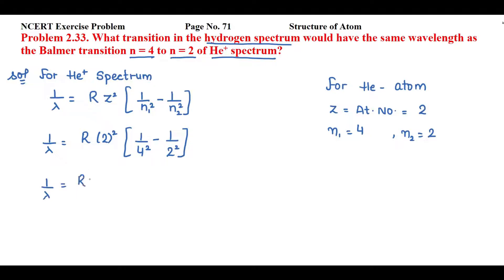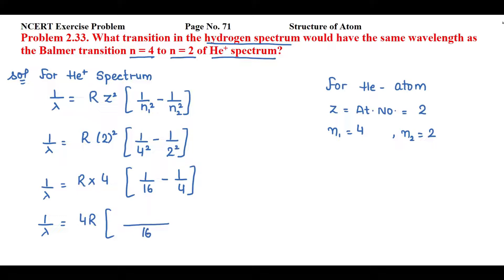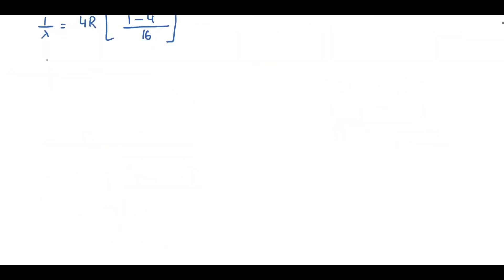Continuing the calculation: 1/λ = R · 4 · (1/16 − 1/4). Taking the LCM of 16, we get 1/λ = 4R · (1 − 4)/16 = 4R · (−3/16). The 4 cancels with 16, giving us 1/λ = −3R/4. This is relation (1) for the helium positive spectrum.